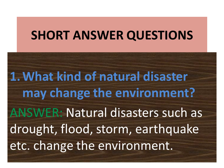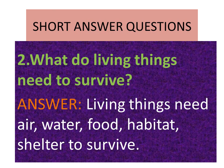Question one: What kind of natural disaster may change the environment? Answer: Natural disasters such as drought, flood, storm, earthquake, etc. change the environment. Question two: What do living things need to survive? Answer: Living things need air, water, food, habitat, and shelter to survive.